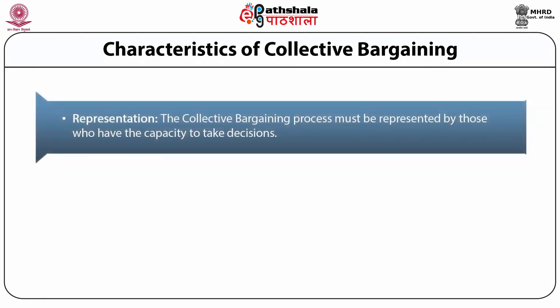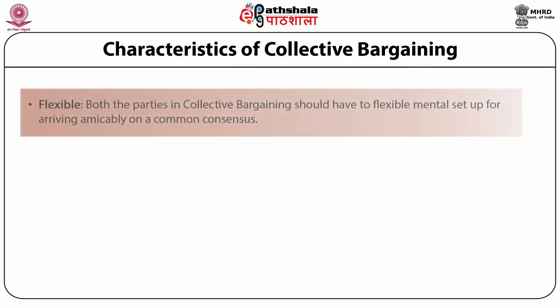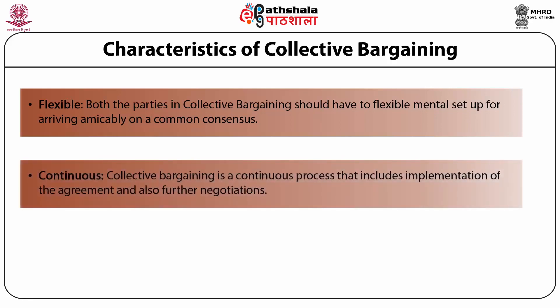Third, representation. The collective bargaining process must be represented by those who have the capacity to take decisions. Fourth, bipartite process. The employees and the employers negotiate the issue directly across the table, and there is no third-party intervention like pressure groups or legal consultants. Fifth, flexible. Both the parties in collective bargaining should have a flexible mental setup for arriving amicably at a common consensus. Sixth, continuous. Collective bargaining is a continuous process that includes implementation of the agreement and also further negotiations.